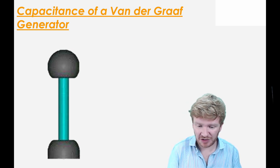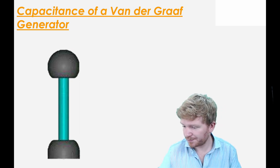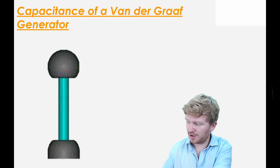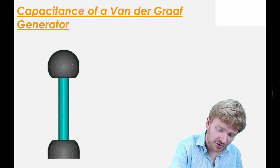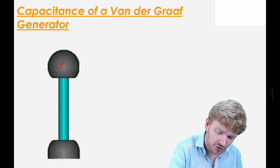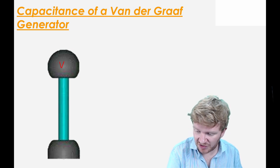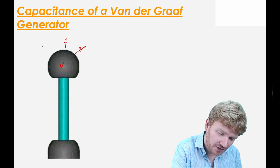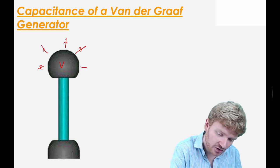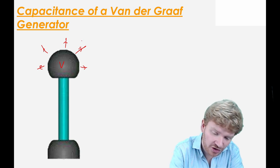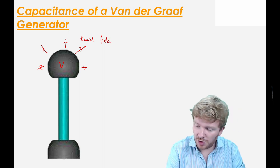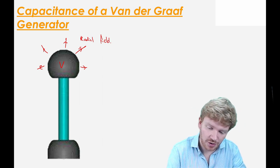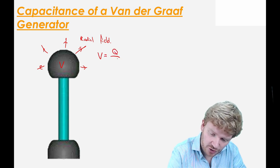There's one last thing we need to talk about: capacitance in a field. This comes up fairly often on the exam, so it's good to be familiar with it. Let's imagine I've got a Van de Graaff generator here, charged up to voltage V. It's going to act like a point charge, giving me a radial field. With a radial field, the potential at the field is equal to q over 4πε₀r.